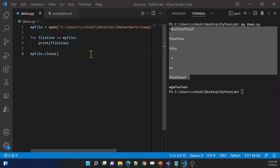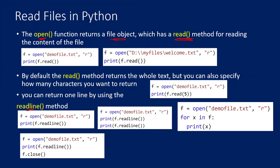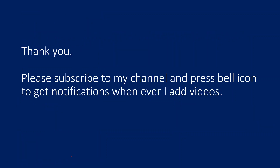So to summarize — you can pass a number to the read function to indicate how many characters you want to read. You can use the readline method to take each line from the file, and if you call it multiple times, each call reads the next line. If you want to loop through each line, use a for loop with your file object. Always make sure to close your file using the close method at the end of your logic. This is how you can very easily play with files to read content from them.